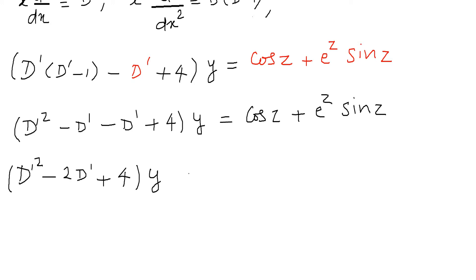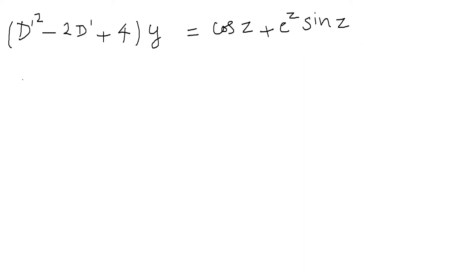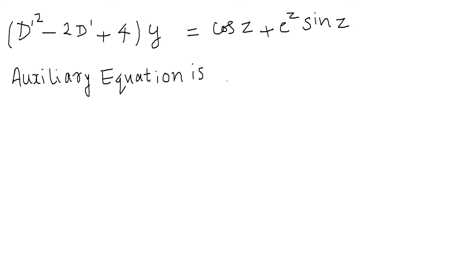Now we have to find the solution of y. y will always be the sum of the complementary function plus the particular integral. Now let us find the complementary function. For that, we have to find the auxiliary equation of D'² − 2D' + 4 into y equals cos z plus e^z·sin z. For the auxiliary equation, we substitute m instead of D'.